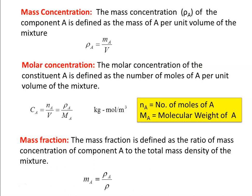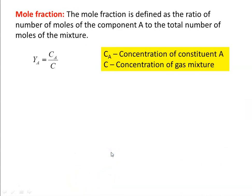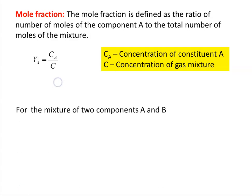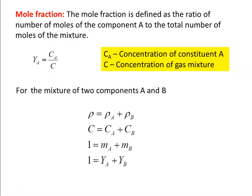Mass fraction M_A equals ρ_A divided by ρ — it is the ratio of mass concentration of component A to the total density of the mixture. The next definition is mole fraction: defined as the ratio of number of moles of component A to the total number of moles. Y_A equals C_A divided by C. These equations hold for a two-component system: ρ = ρ_A + ρ_B; C = C_A + C_B; M_A + M_B = 1; and mole fraction of A plus mole fraction of B equals 1.